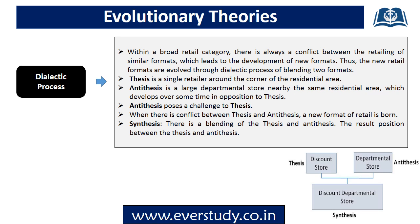Now let's discuss evolutionary theories, starting with the dialectic process. Retail categories are broad and there are always conflicts between similar formats, which leads to new formats developing. New formats evolve through a dialectic process of blending two formats. Here, thesis is a single retailer existing in a residential area; antithesis is a large departmental store in the same area creating opposition to the thesis. When conflict arises between them, a new retail format evolves — the synthesis — which is the blending of thesis and antithesis. For example, a discount store (thesis) and a departmental store (antithesis) in the same area result in a discount departmental store (synthesis).